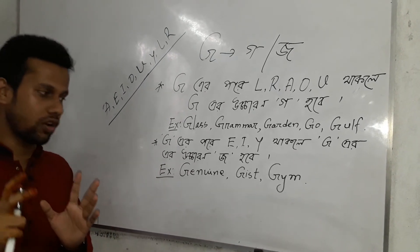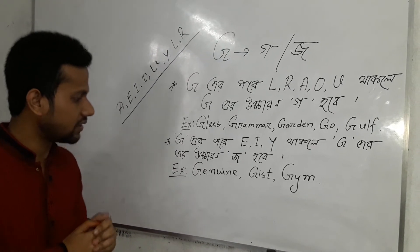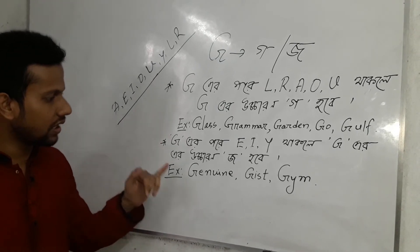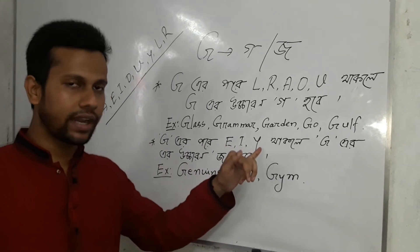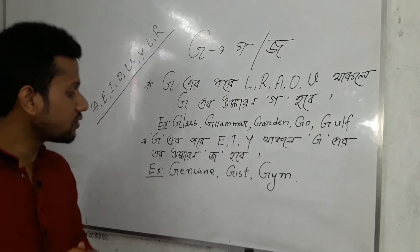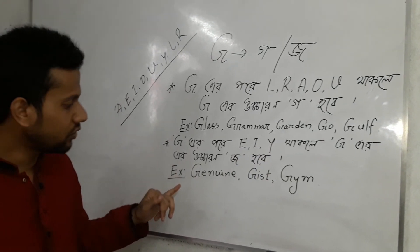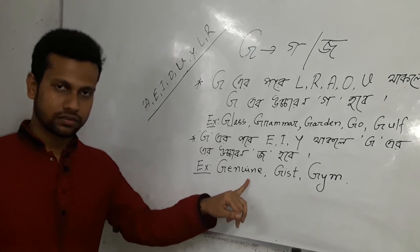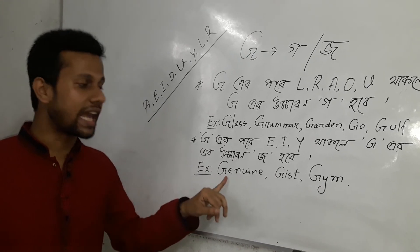If we find that after G there is E, I, or Y, then we have to pronounce it as 'Jo'. You have to keep in mind that after G, if you find E, I, or Y, then you pronounce it as 'Jo'. So for example, 'Genwin' is pronounced 'Zenwin', not 'Genwin'.